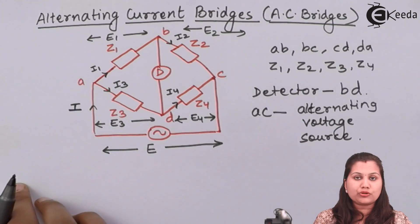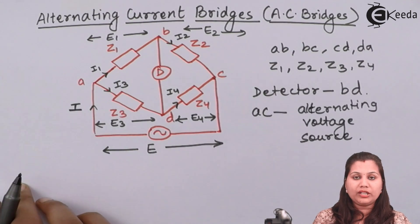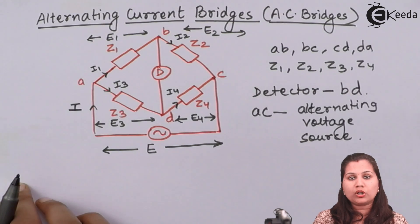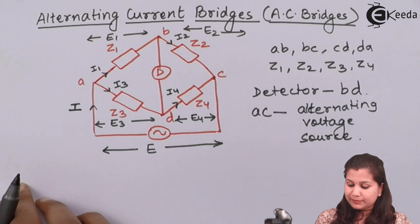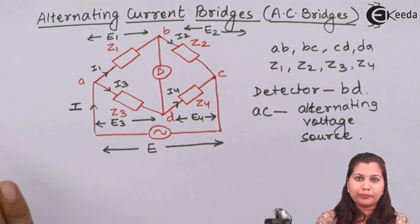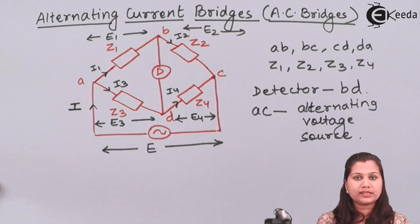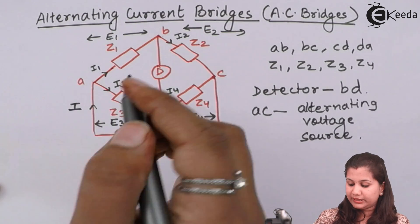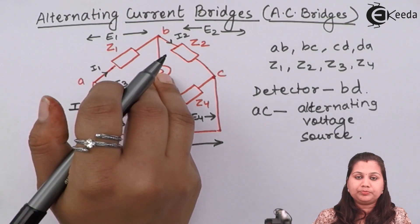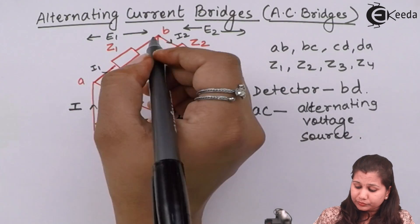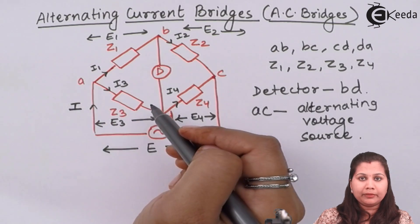Now let us derive the balance equation for this bridge. In the Wheatstone bridge, the bridge is said to be balanced when the galvanometer shows null deflection — meaning no current passes through the galvanometer — so the potential difference between points B and D is zero and they are at the same potential. Similarly, this AC bridge is said to be balanced when the detector shows null deflection, meaning B and D are at the same potential.